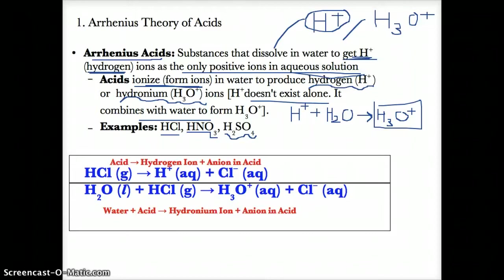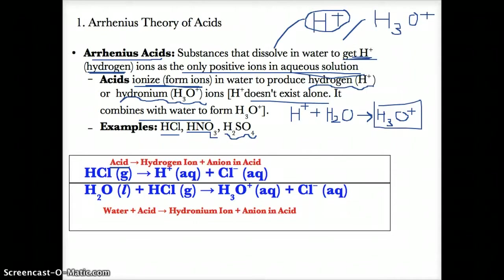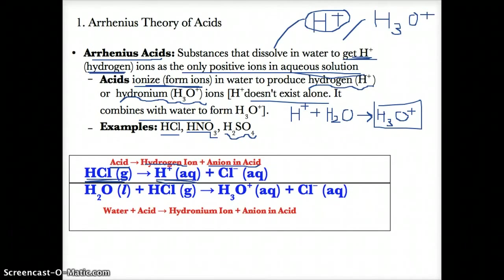Let's see an example of an acid that dissolves in water and ionizes to form H+ as the only positive ion in solution. Generally, an acid will ionize or break apart to form a hydrogen ion H+ and a negative ion known as an anion. For example, HCl gas will break apart in solution to form H+ (aq), plus the anion Cl- (aq).